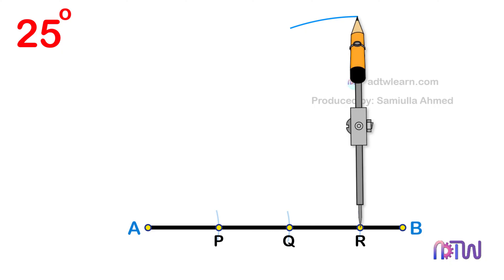After this, without changing the length of the compass needles, and using this point Q as a center, cut an arc.